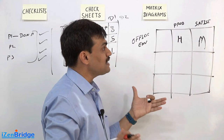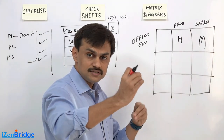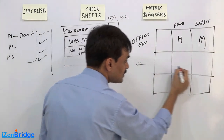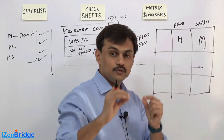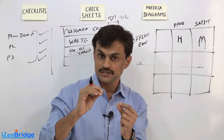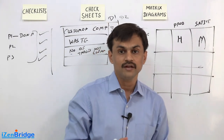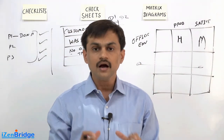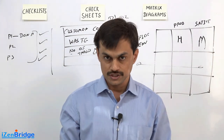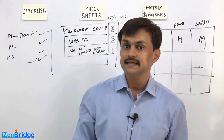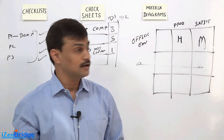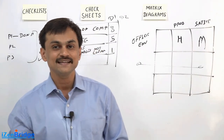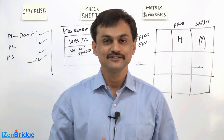You might have seen a matrix showing distance between two cities: you have cities on one axis and cities on the other — you pick your city, find another city, and see the distance between them. In a simple way, when we have multiple variables and we want to see how they relate with each other, we can present as well as analyze that data using matrix diagrams. So these are the three tools and techniques I wanted to talk about in this particular video.